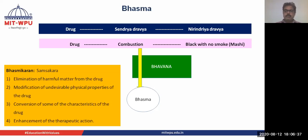We have to do some samskara to the drug to convert it into Bhasma. The objectives of this samskara are: elimination of harmful material from the drug, modification of undesired physical properties of the drug, conversion of some of the characteristics of the drug, and enhancement of the therapeutic action of the drug.